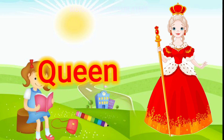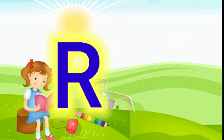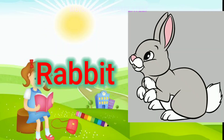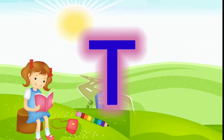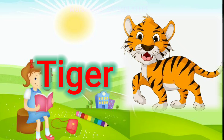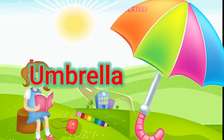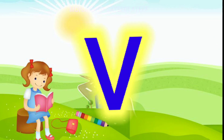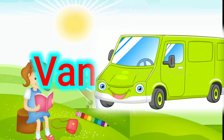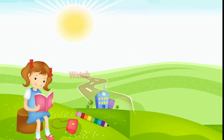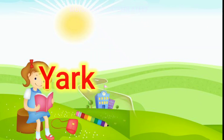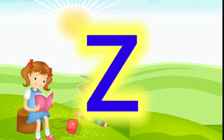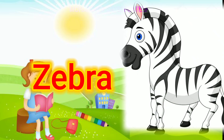Q for queen, R for rabbit, S for sheep, T for tiger, U for umbrella, V for van, W for watch, X for xylophone, Y for R, Z for zebra.